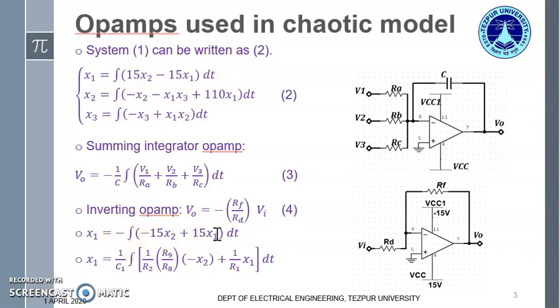So we get minus integration of minus 15x2 plus 15x1. An important thing to observe here is, we shall get the input voltages all in negative form. For instance, here it was positive x2, so here we will get minus x2. Here it was minus x1, so here we will get plus x1. Minus x2 and x1 can be considered as the input voltages V1 and V2.